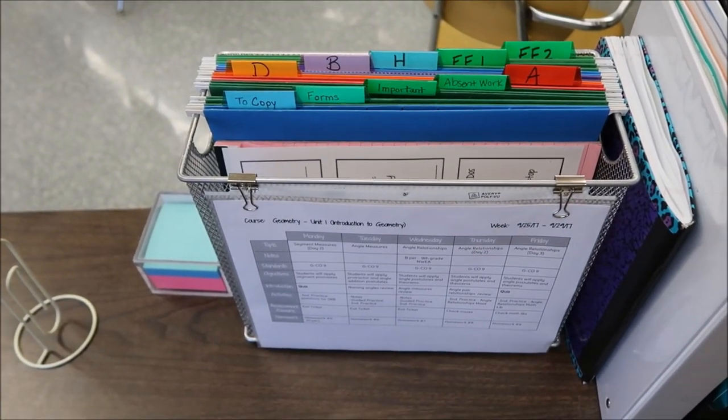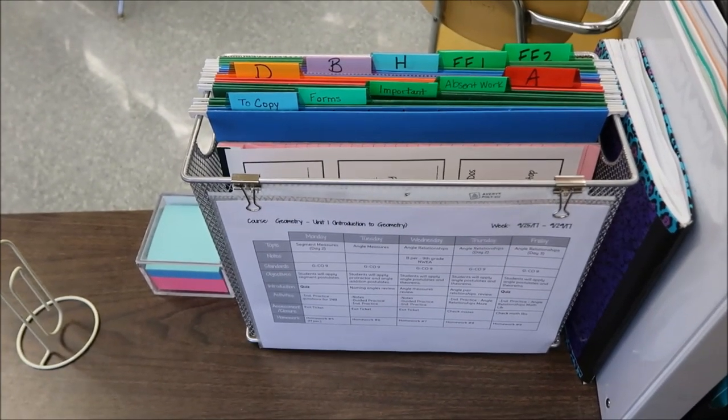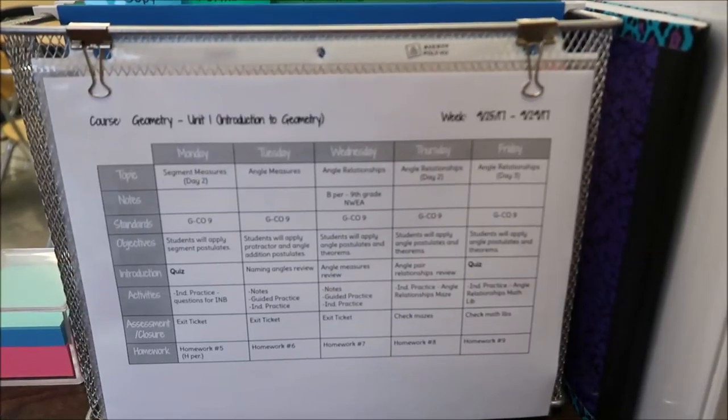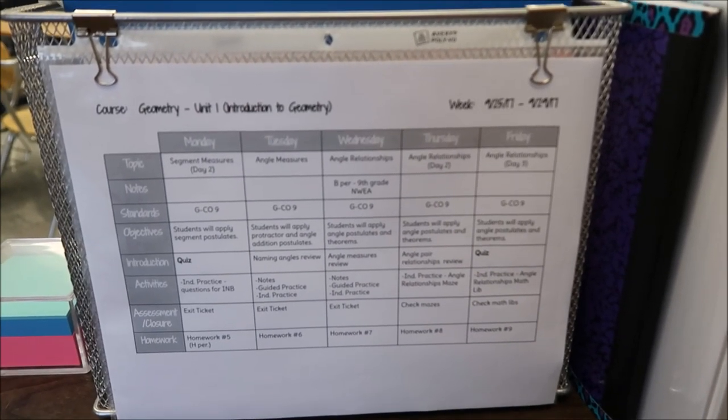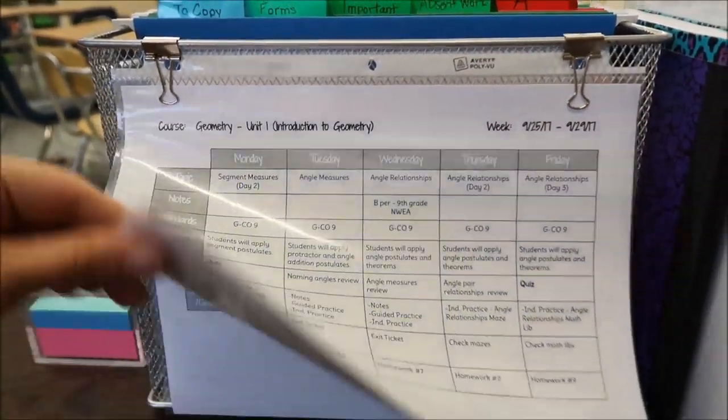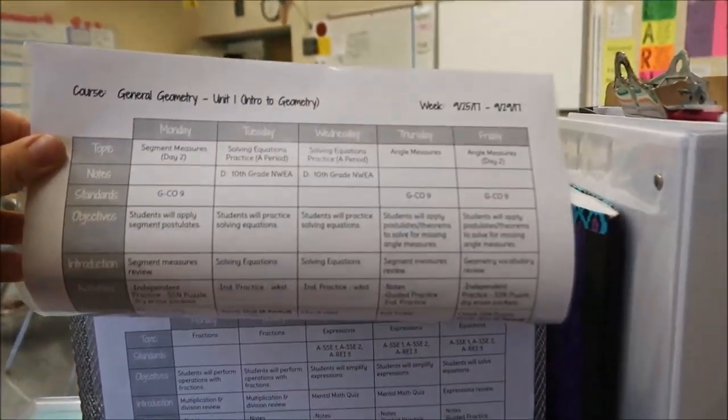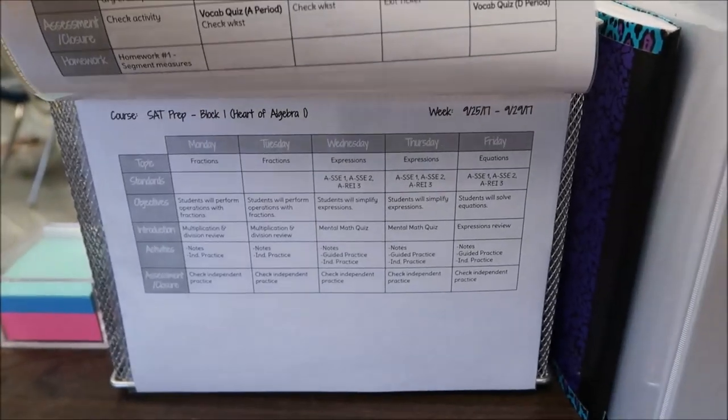Last but not least is my desktop file. This is probably the most important thing that's on my desk. I showed this in my last vlog but I have my week at a glance plans clipped to the front of the box. So I have geometry. If I flip up I'll have general geometry and then I have SAT prep under that.